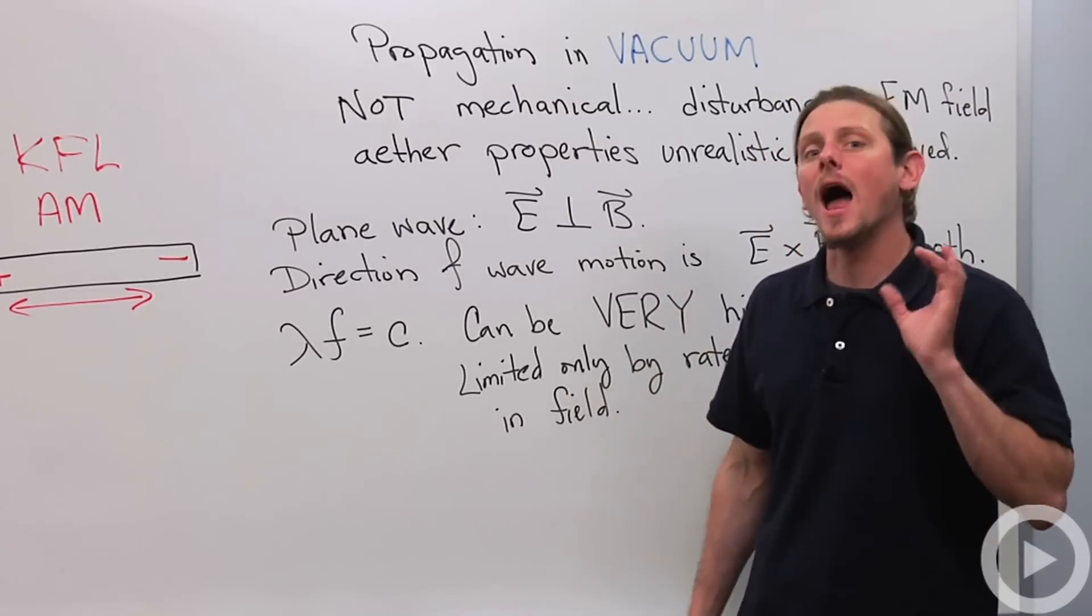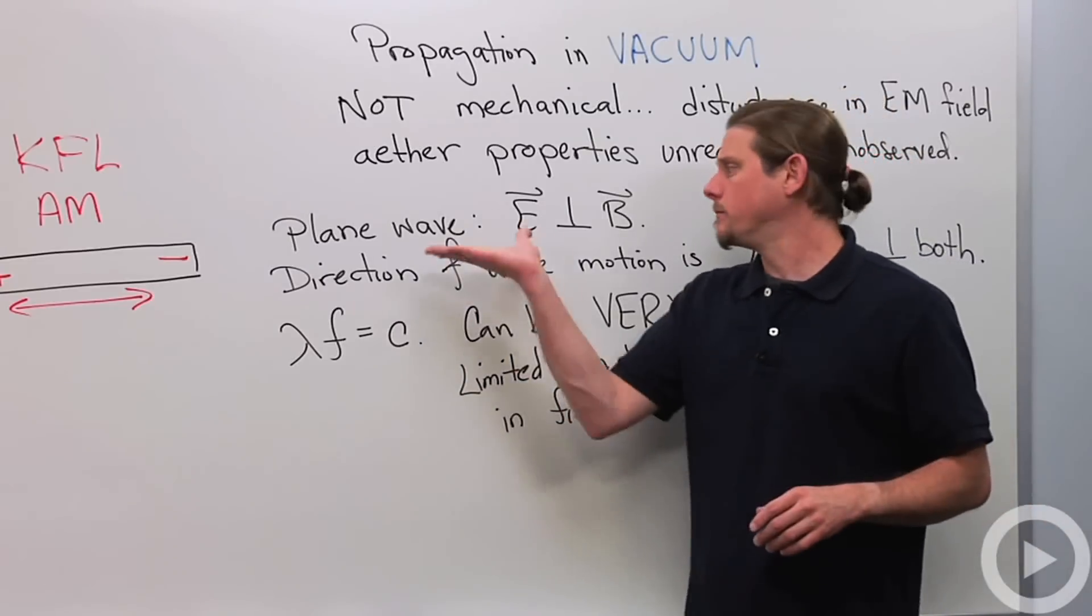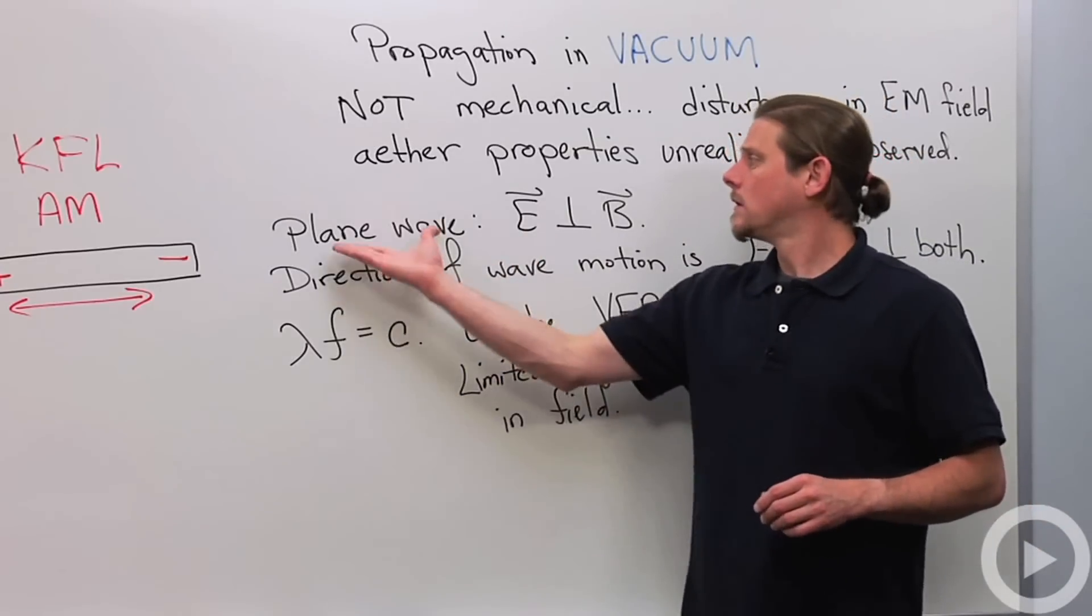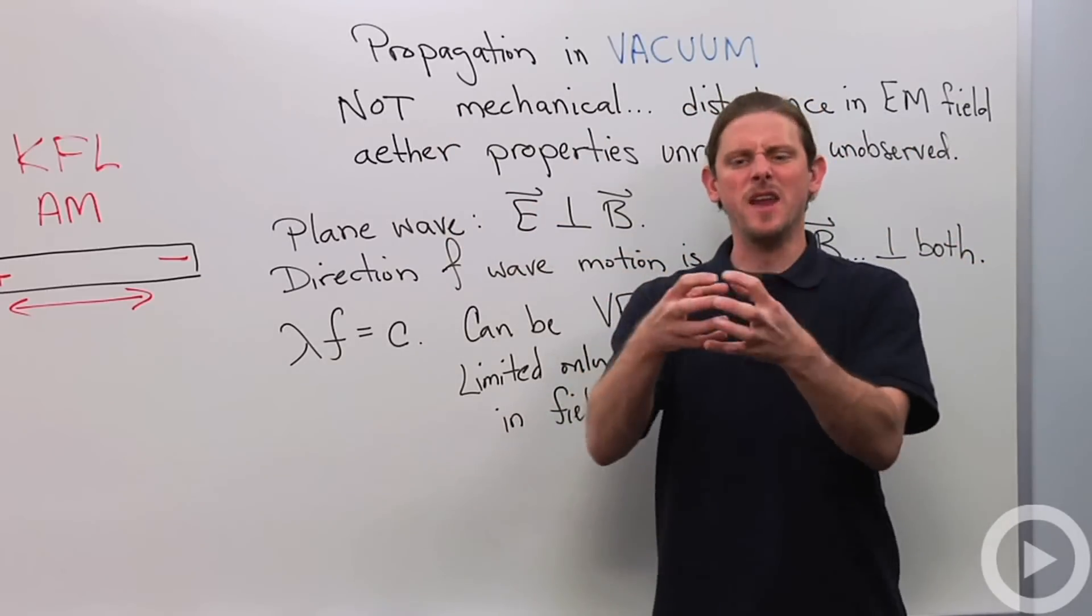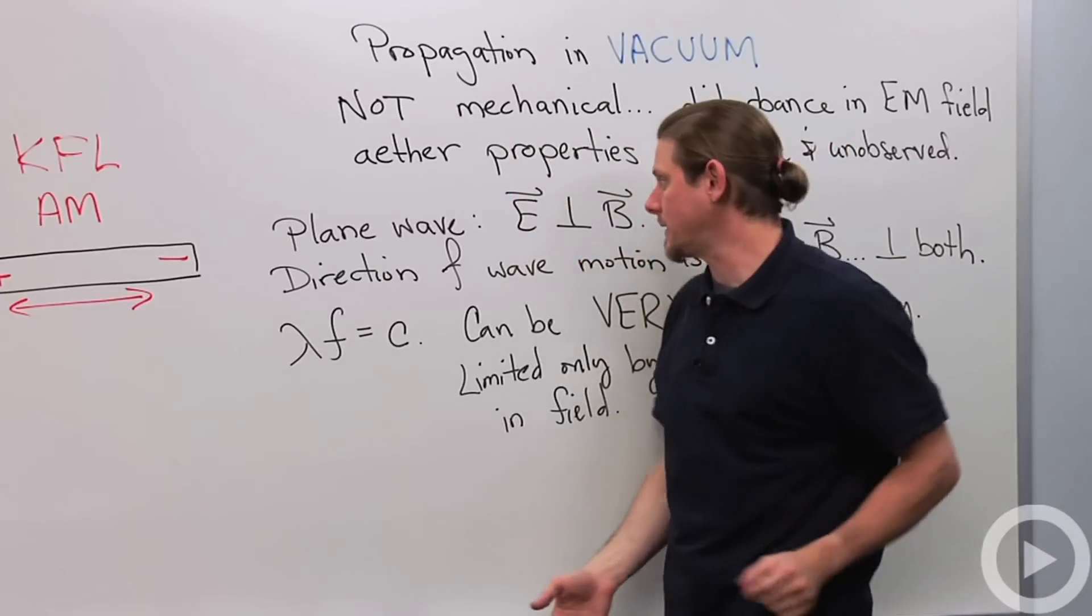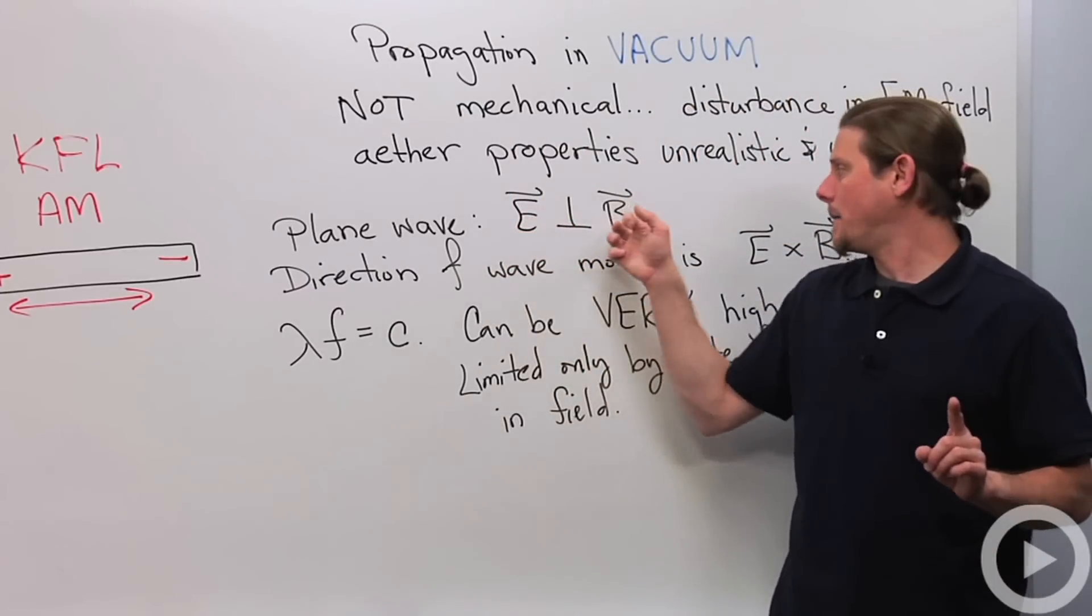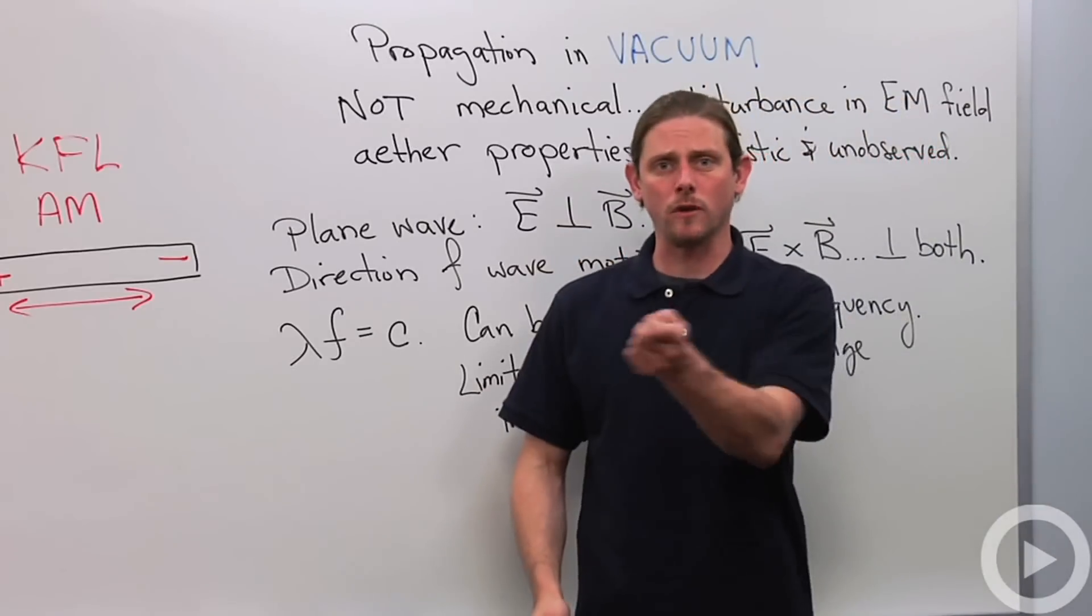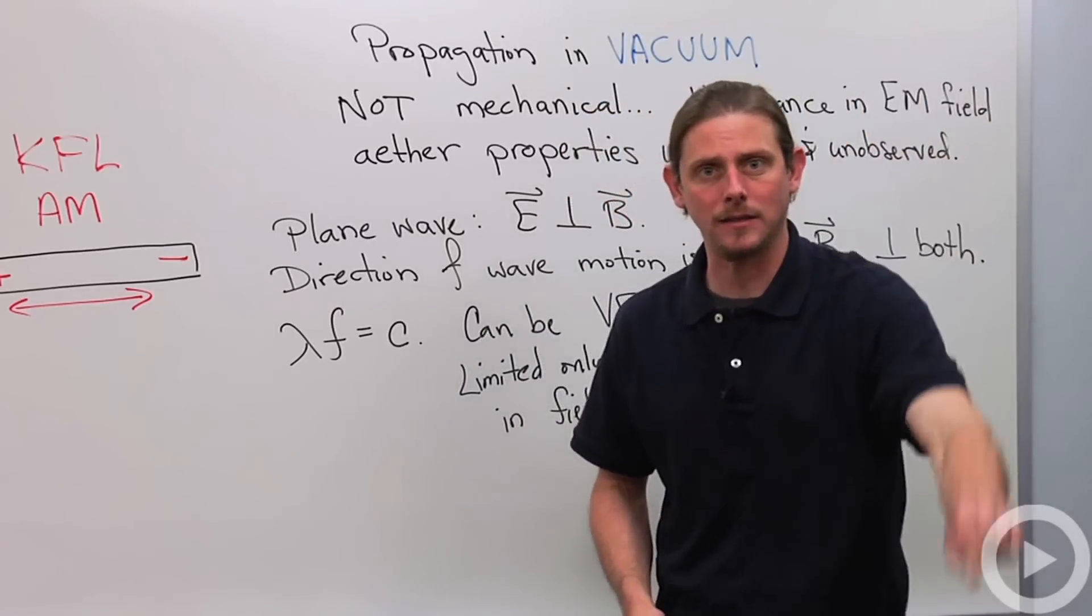All right some basic properties of electromagnetic waves. When you have a plane wave and that means that it's just coming like this not like a light source that goes out all like that but just kind of plane wave like that always associated with an electric field and a magnetic field that are perpendicular to each other. So if the electric field is going back and forth like this the magnetic field will go back and forth like this.